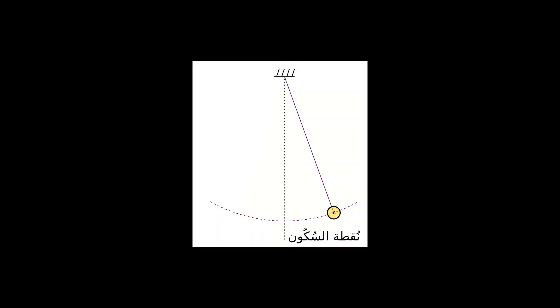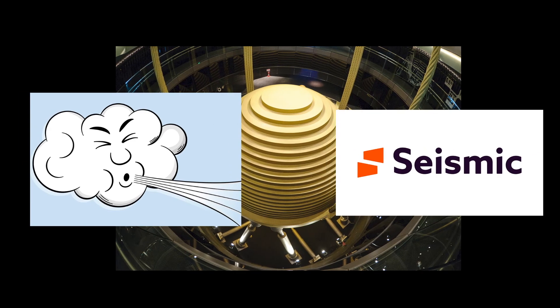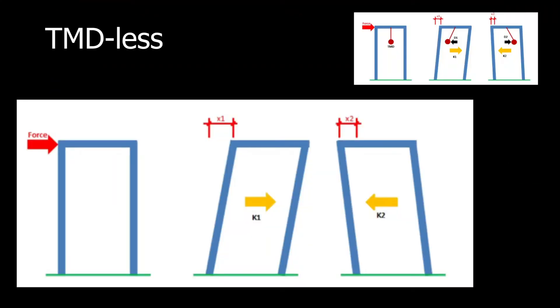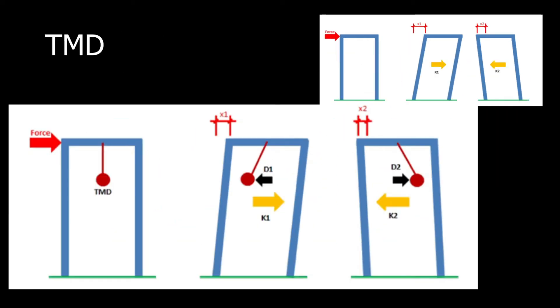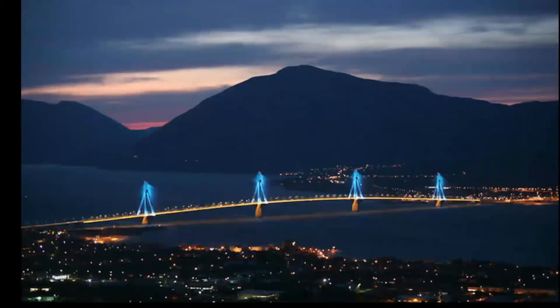Tuned mass dampers can be thought of as a pendulum located in a building or structure. The purpose of TMDs is to reduce vibrations from wind or seismic activity, and they are especially useful in high-rise buildings and suspension bridges. This diagram can be used to visualize the principles of the TMD. As you can see, the mass acts as a counterbalance to the moving building, causing a smaller net force. A practical example of this can be seen in the Rion-Antirion bridge, which uses a similar, albeit slightly different, mechanic to remain usable in the event of a seismic event.